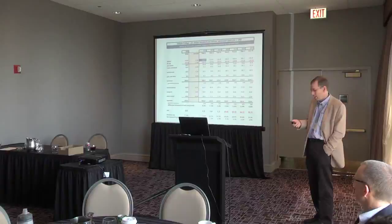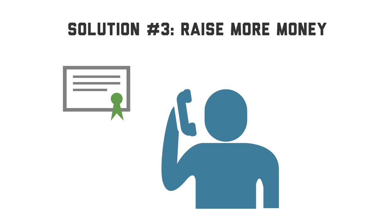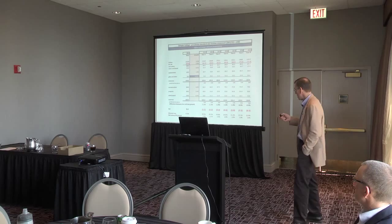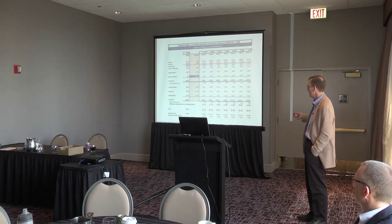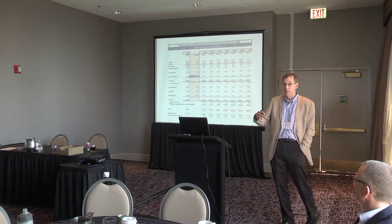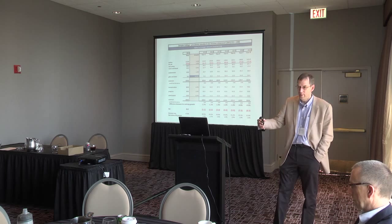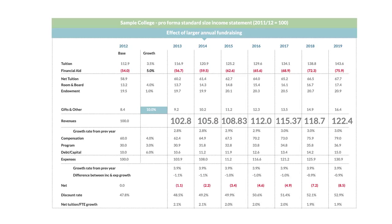Perhaps we should just tell the fundraisers to raise some more money. There are generally some opportunities to broaden the base of giving. In terms of alumni participation, 50% is a gold standard, and very few schools get to that. In this case I've changed gifts and others to grow at 10% per year compounded — every year. This isn't a 10% kick in one year because of a great reunion; this is 10% year after year. But since gifts are generally the smallest component of the revenue picture, even a significant increase has only a modest effect.